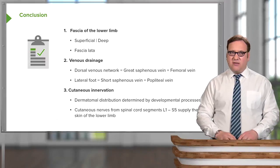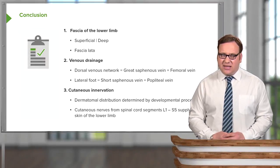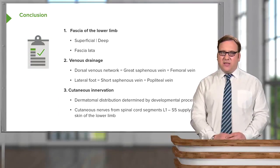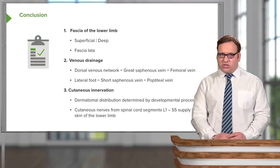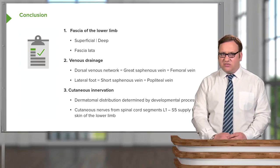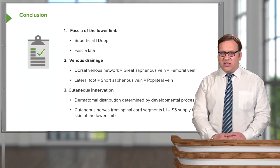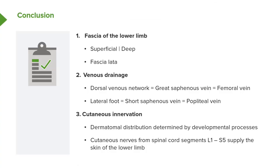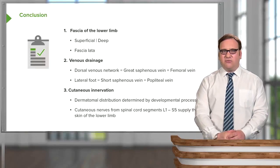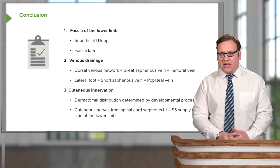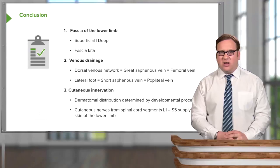In this lecture, we've looked at the fascia of the lower limb, both the superficial and deep, specifically looking at the fascia lata. We looked at the venous drainage — the dorsal venous network giving rise to the great saphenous vein and the short saphenous vein, draining into the femoral vein and the popliteal vein respectively. We then looked at the cutaneous innervation with the dermatomal distribution, which is determined by the developmental process, similar to the upper limb. The cutaneous nerves from the spinal cord segments L1 through S5 supply the skin of the lower limb.